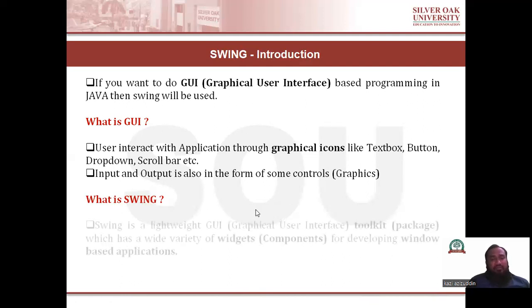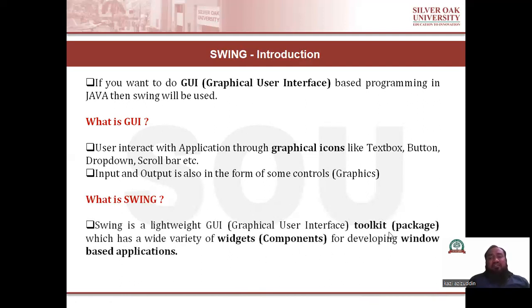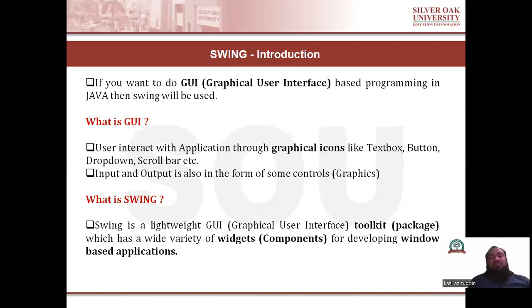Now what is Swing? Swing is a lightweight GUI toolkit package which has a wide variety of widgets, or components, for developing window-based applications. In Java programming language, Swing provides a package through which we can able to create a GUI-based application — to implement GUI-based desktop application in Java. In Swing toolkit, there are wide varieties of components available. Once you import the Swing package in your Java program, there are lots of components available for use.